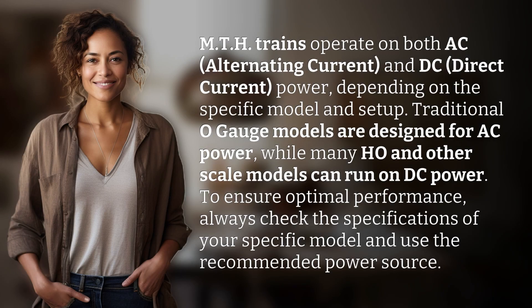MTH trains operate on both AC, alternating current, and DC, direct current, power, depending on the specific model and setup. Traditional O-gauge models are designed for AC power, while many HO and other scale models can run on DC power.